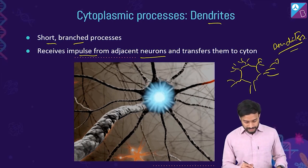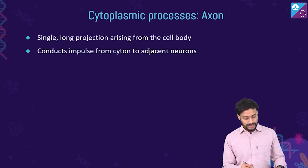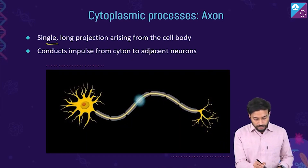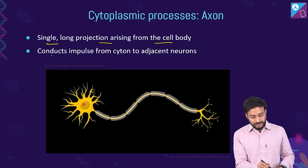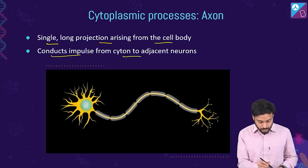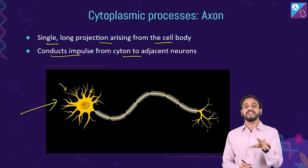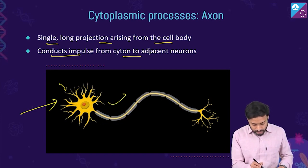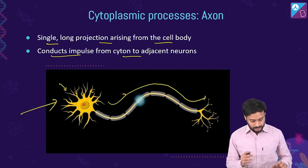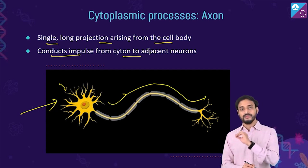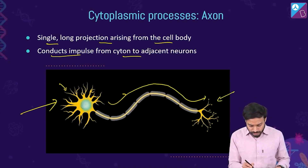The axon is a single long projection arising from the cell body. It conducts impulses from the cyton to adjacent neurons. Dendrites receive signals from adjacent neurons, pass them through the cyton, and then into the axon toward its terminal end.